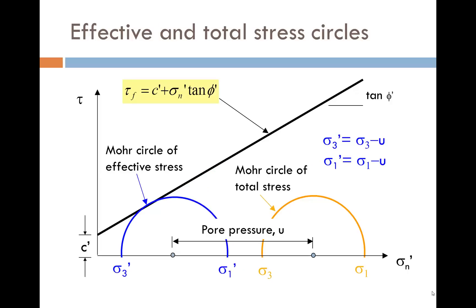In this final slide, you can see that we can draw separate Mohr circles for effective stress, as shown in blue, and total stress, shown in orange. The circles are separated by a distance corresponding to the pore water pressure U.